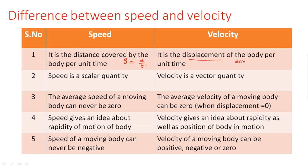Velocity is the displacement of the body per unit time — that is, the rate of change of displacement. We write it as Δd/Δt. So rate of change of displacement is simply known as velocity.